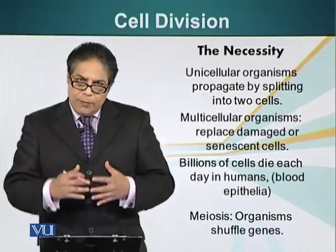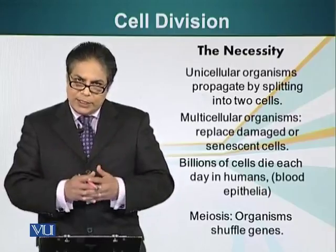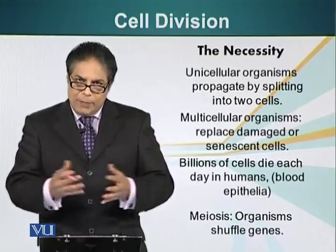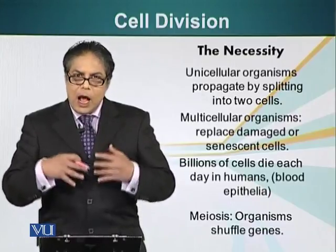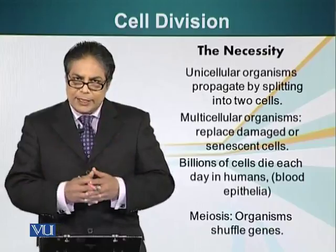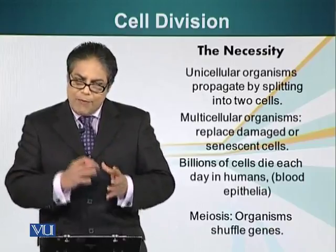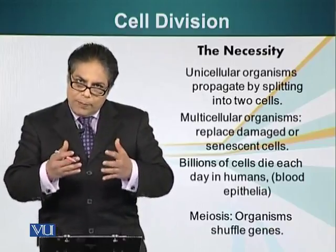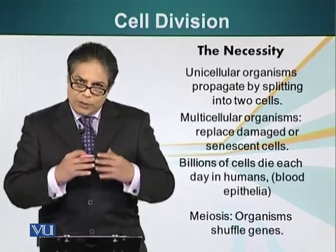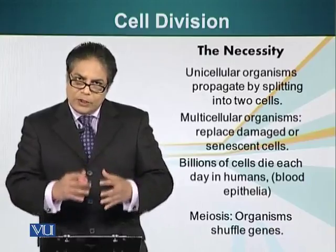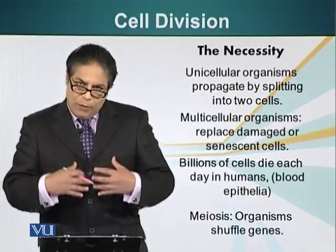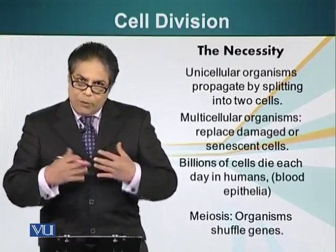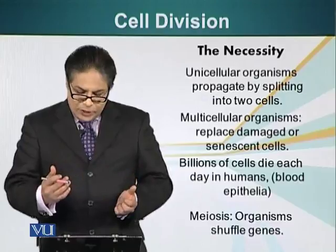In humans, billions of cells die each day. For example, red blood cells and our epithelial cells — these cells have to be replaced. The replacement of the cell has to come from another cell in the process of cell division.